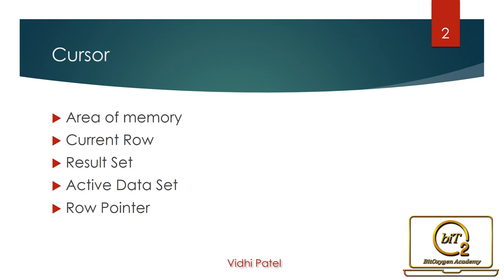Current row: the row that is being processed is called the current row. Result set: data is stored in the cursor because of some SQL operation, and it is called the result set.